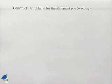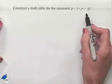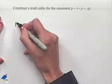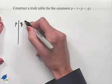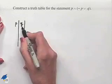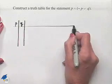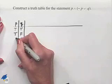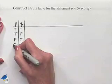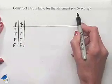We're going to look at an example where we construct a truth table for the statement P and (not P or Q). We have two simple statements to work with — we're going to have a column for P and a column for Q. We'll begin by filling out our first two columns in the usual fashion: true true, true false, false true, false false.